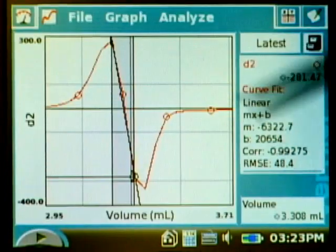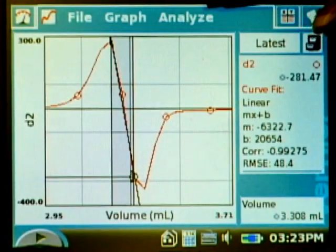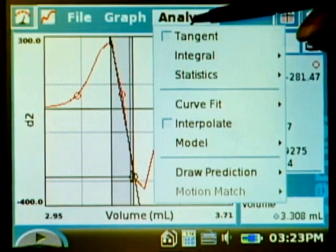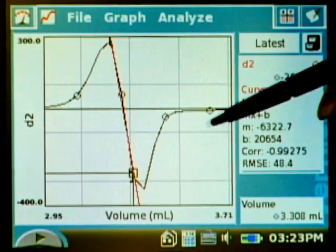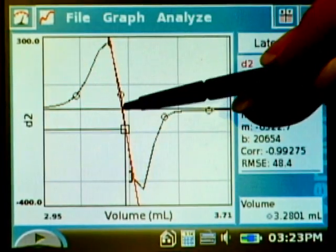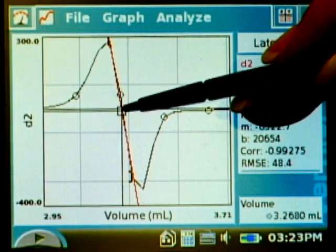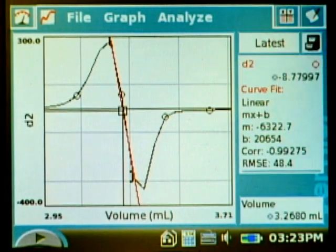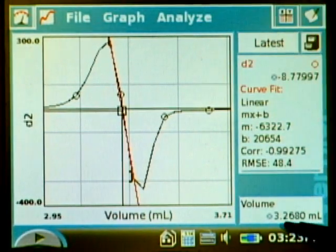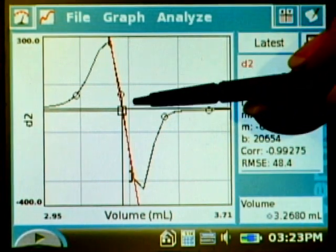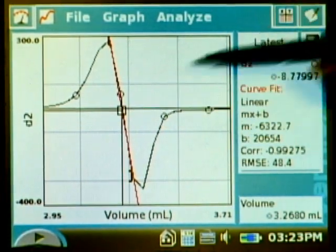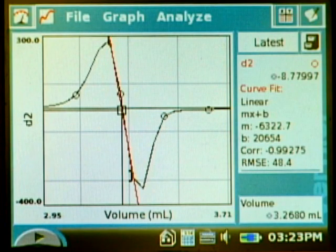Alright, now that I have a linear fit, I can turn on interpolate and get very close to zero right there. Where I'm as close to zero as I can, my volume is 3.2680. So that gives us the exact equivalence point using the second derivative, which is probably the most accurate way to do that.